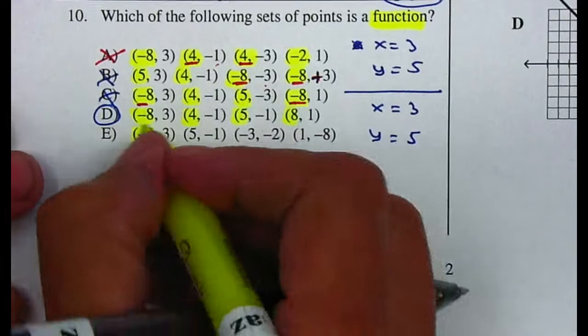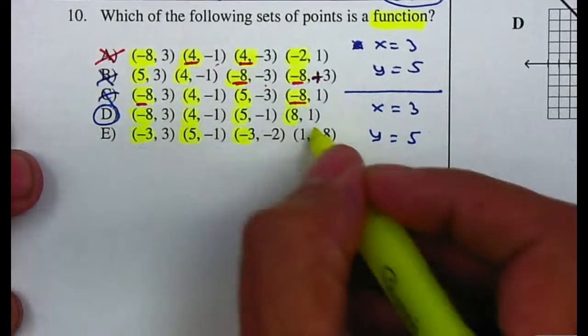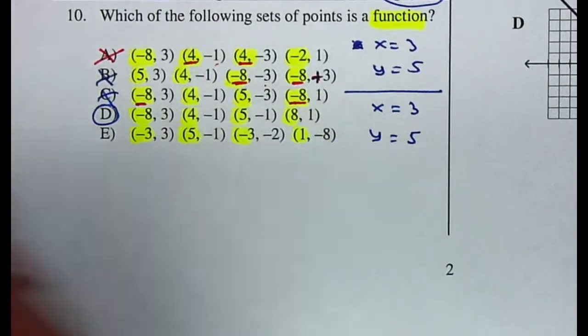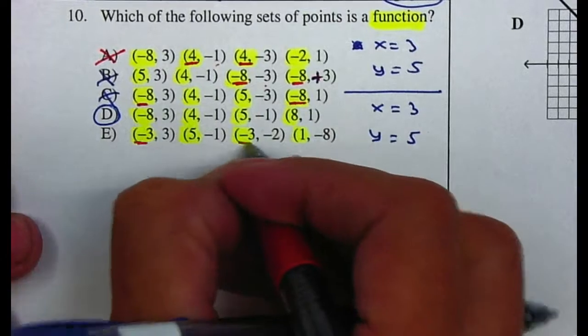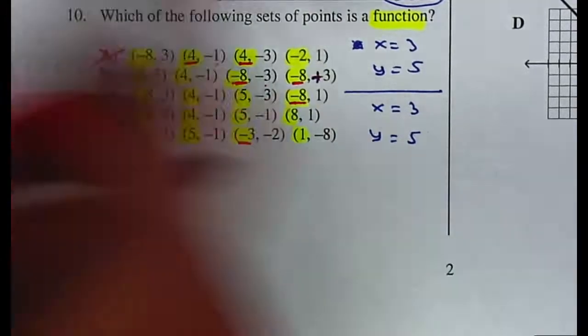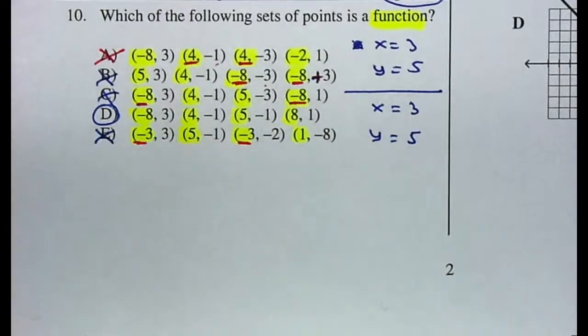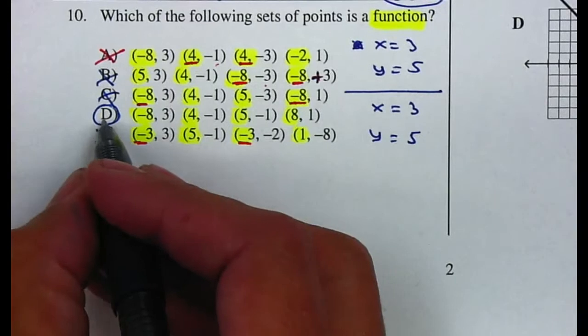On letter E, we have a negative 3, a 5, a negative 3, and a 1. You cannot have a negative 3 give you a 3, and then the next time you plug in a negative 3 gives you a negative 2. So E is not. So the only one is letter D.